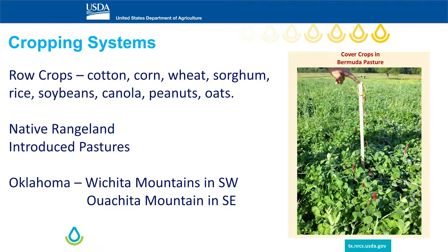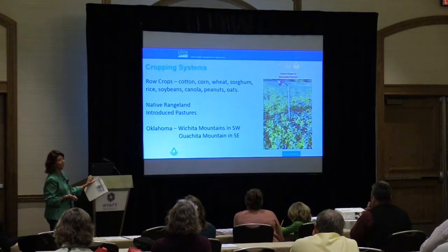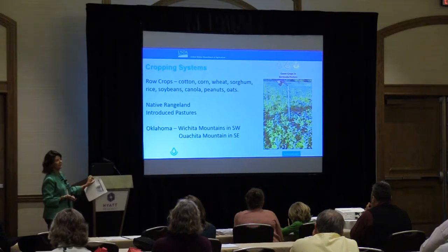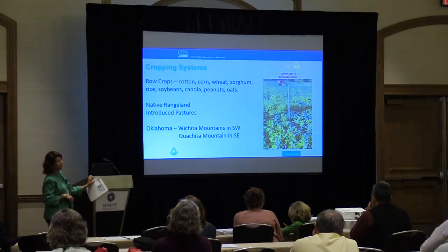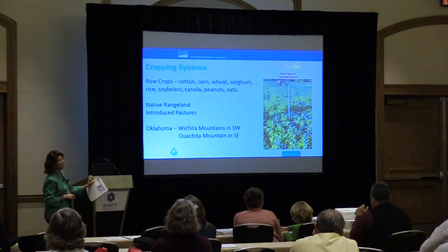In Oklahoma, there are also those mountain ranges I mentioned. There's a lot of native rangeland and introduced pasture. Most of the introduced pastures are in the east and central Texas, with some in the central south. Towards the west, there's a lot of native rangeland.